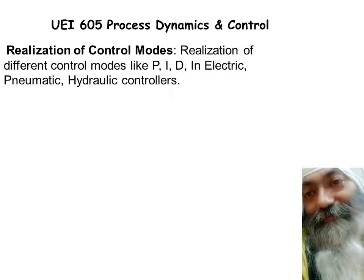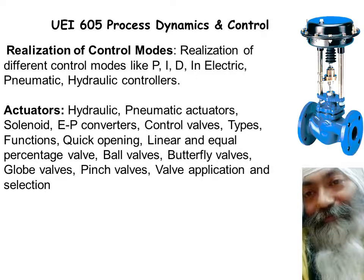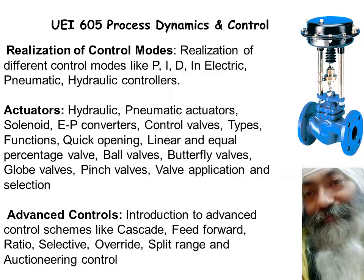The remaining part of the syllabus consists of realizing these control modes in electrical, pneumatic, or hydraulic systems. We need some actuators — different types of E-to-P converters or different types of valves. Finally, we have some advanced controls: a glimpse of feedforward, ratio, auctioneering, etc., with a little overlap so as to maintain continuity between this course and the next course on Advanced Process Control.